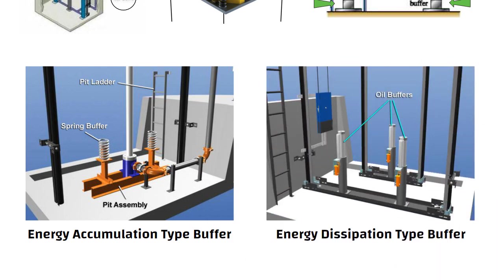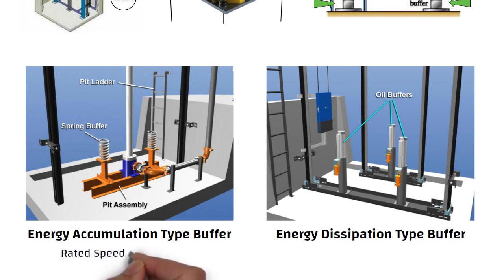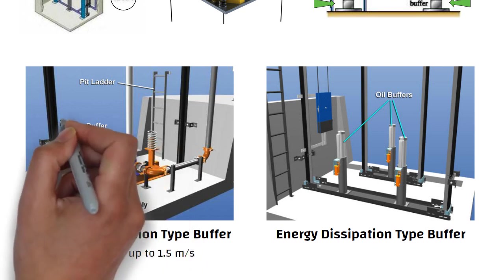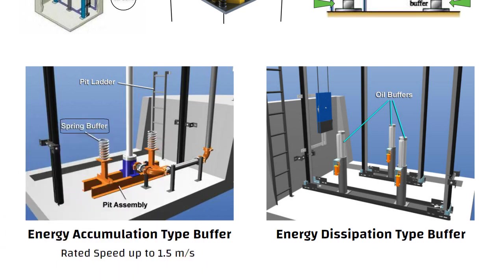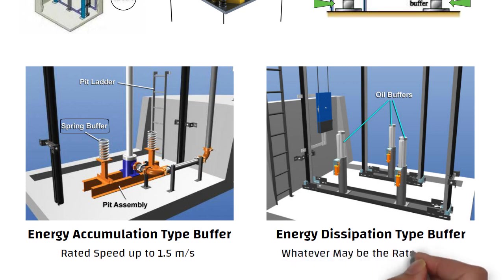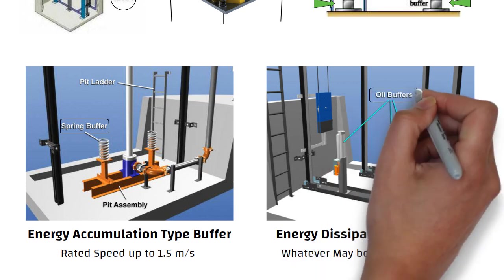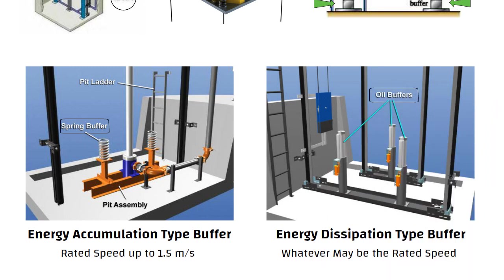Energy accumulation type buffers may be used only with lifts having a rated speed up to and including 1.5 meters per second. For example, spring buffer. Energy dissipation type buffers may be used whatever the rated speed of the lift. For example, oil buffer.